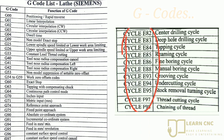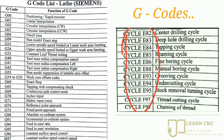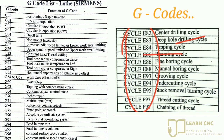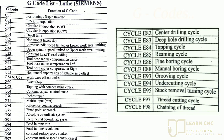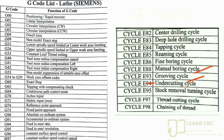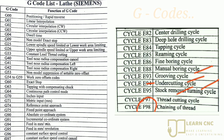In the remaining codes there is a slight change — they are written as 'cycle.' Cycle E82 is center drilling cycle, Cycle E83 is deep hole drilling cycle, Cycle E84 means tapping cycle, Cycle E85 means rimming cycle, Cycle E86 means fine boring cycle, Cycle E88 means manual boring cycle, Cycle E93 is grooving cycle, E94 is undercutting cycle, E95 is stock removal turning cycle, F97 is threading/thread cutting cycle, and F98 means chaining of thread.